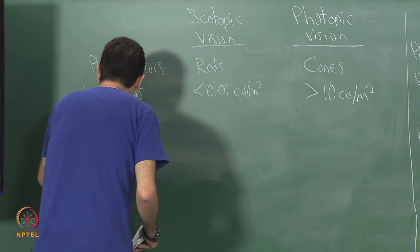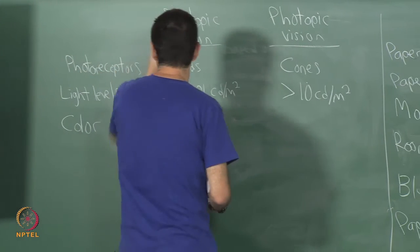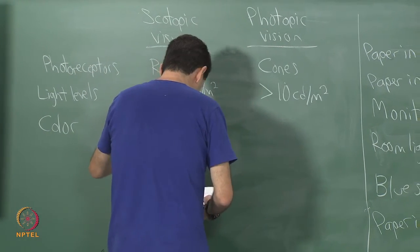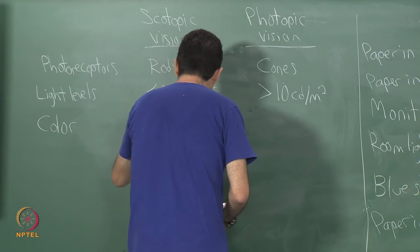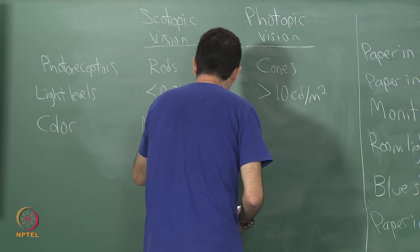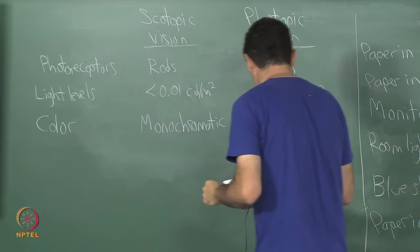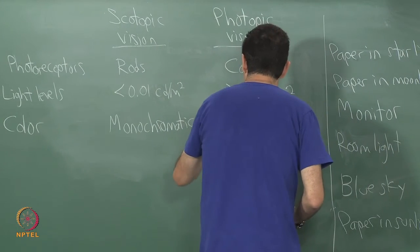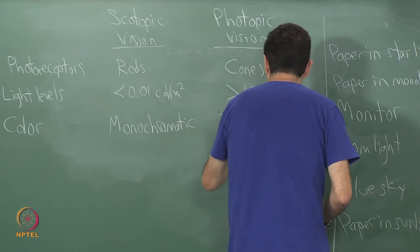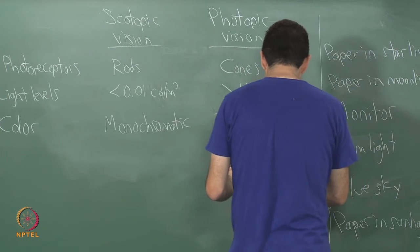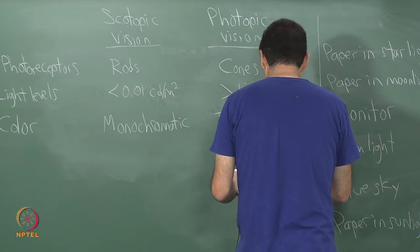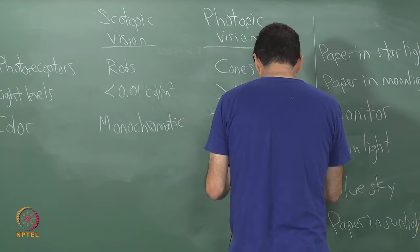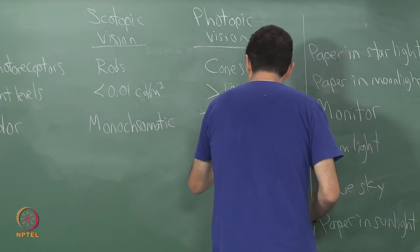As far as color perception goes, when you are in scotopic vision mode it is monochromatic, and in photopic mode it is trichromatic based on the RGB sensitivities of your cones.